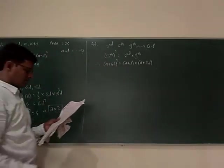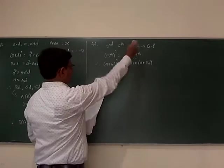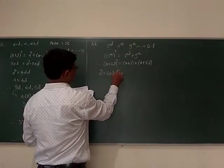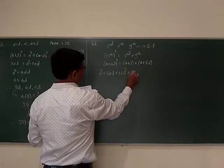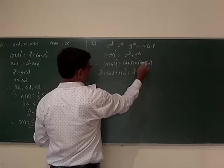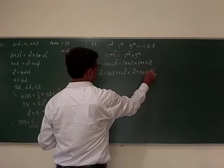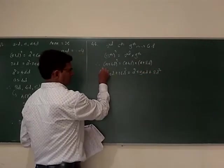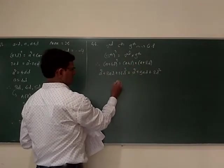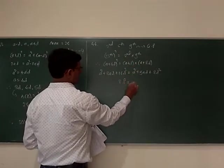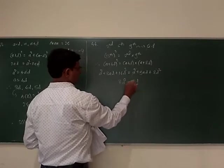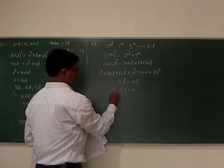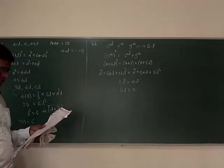After simplification, A squared plus 8AD plus 16D squared equals A squared plus 9AD plus 8D squared. A squared cancels, so 8D squared equals AD, which gives us 8D equals A.